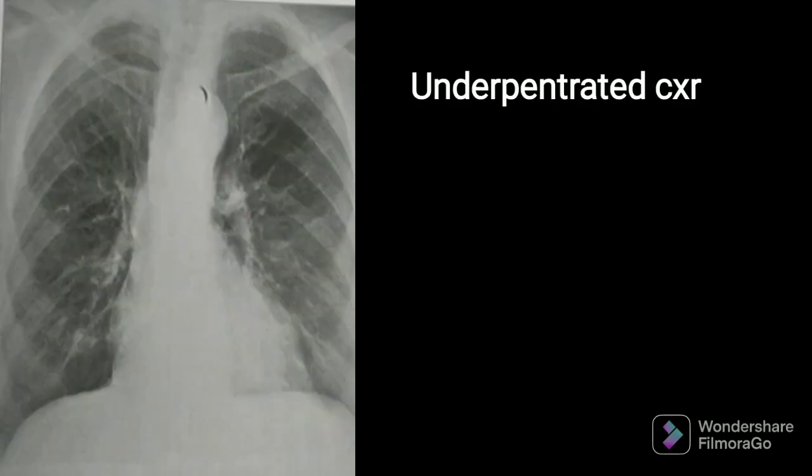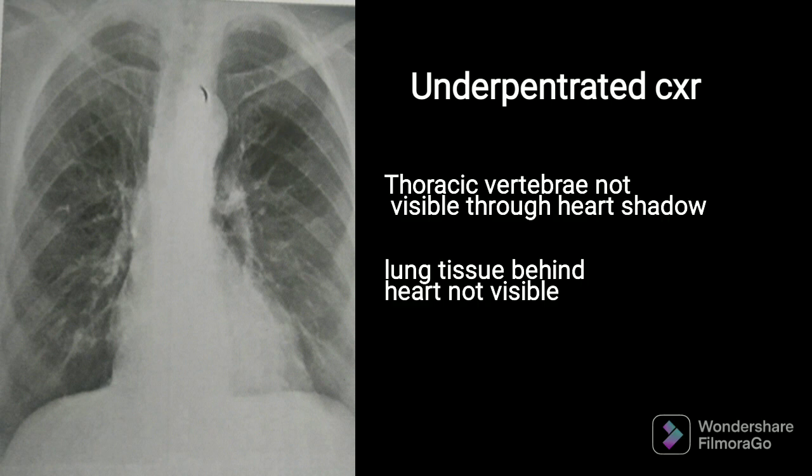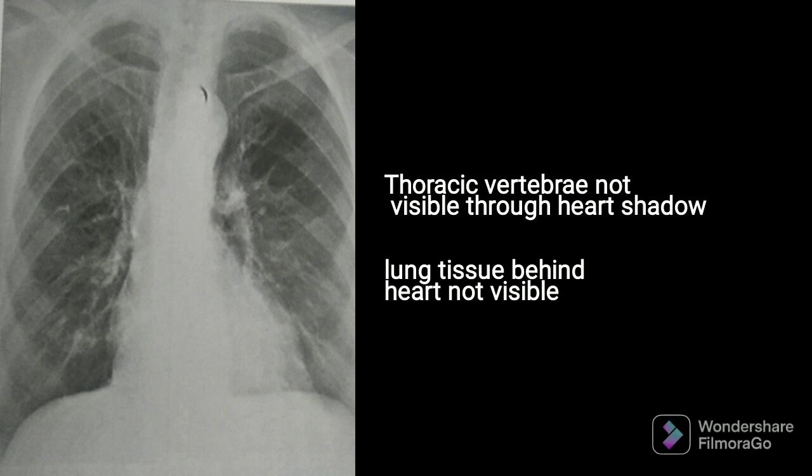The second type is an under-penetrated chest x-ray. In an under-penetrated chest x-ray, thoracic vertebrae are not visible through the heart shadow, and lung tissue behind the heart is not going to be seen. This causes obscuration of pathologies that are in that part of the lung.